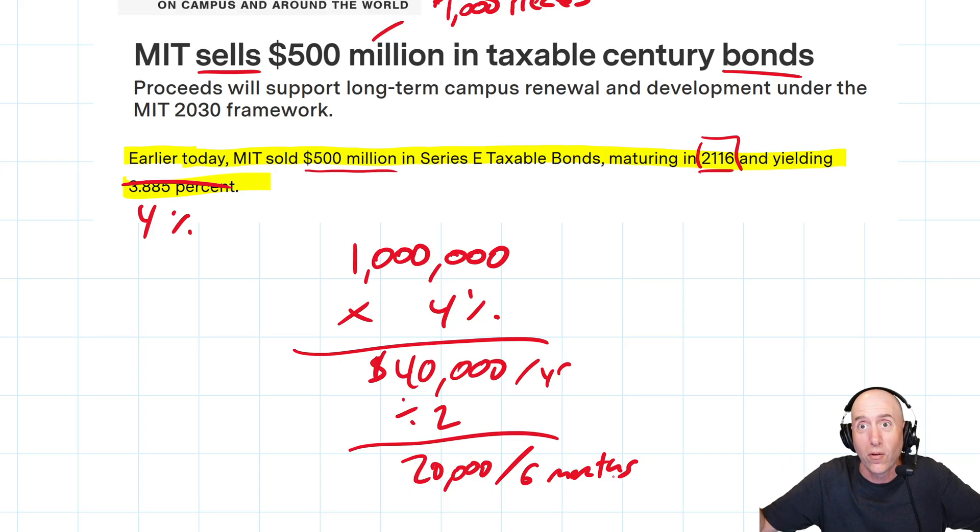Every six months you check your direct deposit and you got $20,000 from MIT. That's what's in it for you as the investor. And why is that attractive? Well, you could buy an S&P 500 index fund or you could buy Apple stock or NVIDIA stock, but then you've got to deal with the ups and downs of the stock market.